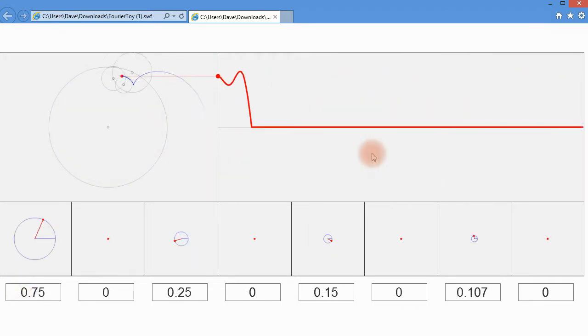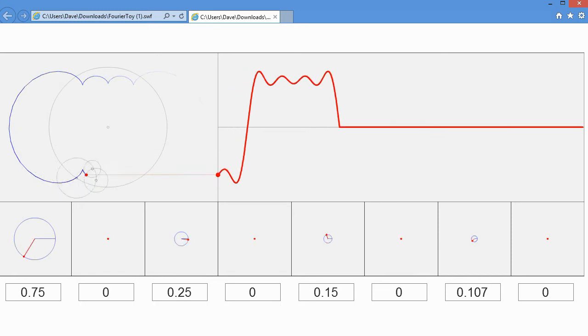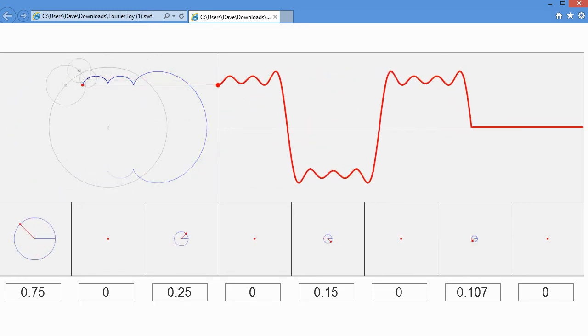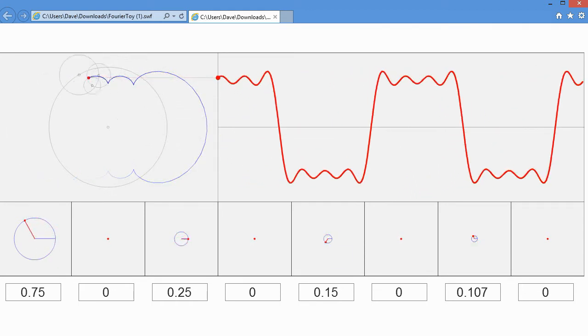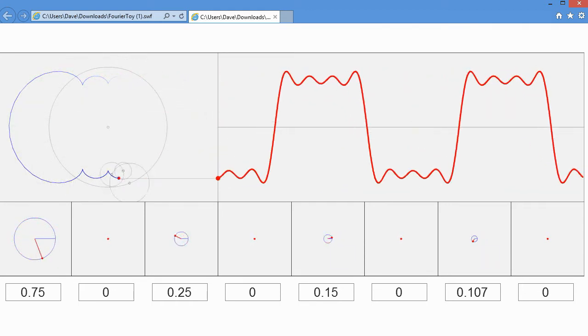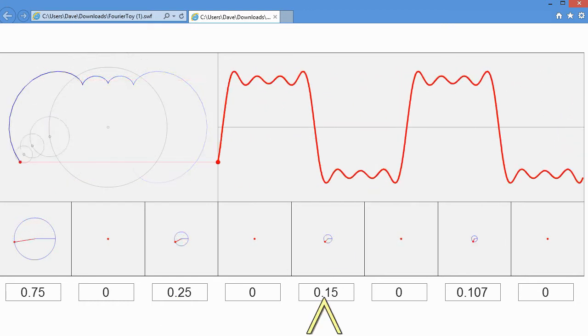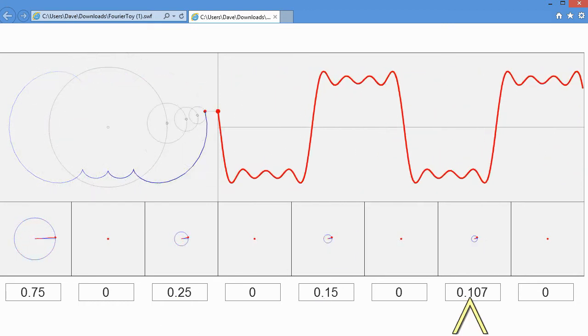You may have heard that a square wave is a combination of a sine wave and its odd harmonics. While some higher harmonics would square off the corners and smooth the top and bottom, it's easy to see the square wave taking shape with just the third, fifth, and seventh harmonics.